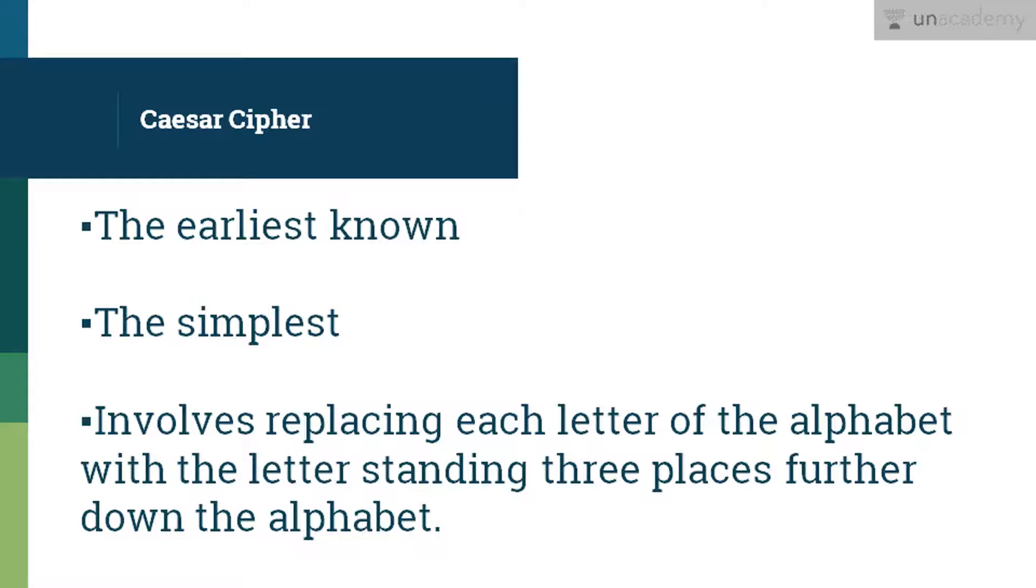So the first technique which we will learn is the Caesar cipher. It is the earliest known method and also the simplest use of the substitution cipher. It was also used by Julius Caesar and hence the name Caesar cipher. The Caesar cipher involves replacing each letter of the alphabet with the letter standing three places further down the alphabet.